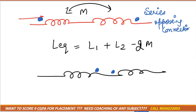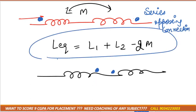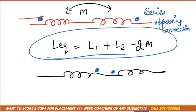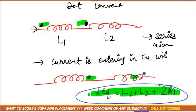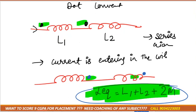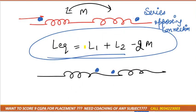To summarize: if both dots are on the same side — whether both currents are entering or both are leaving — then L equivalent equals L1 plus L2 plus 2M. If the currents are on opposite sides — one entering and one leaving — then L equivalent equals L1 plus L2 minus 2M.